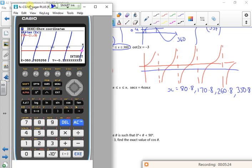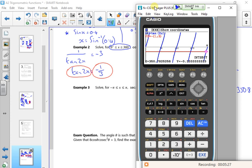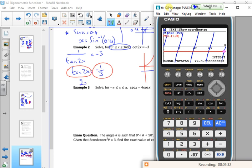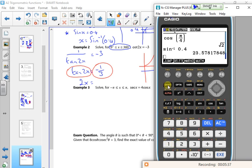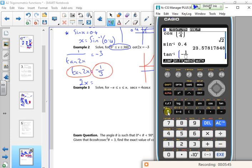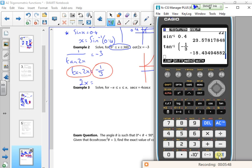Now one bit I kind of missed off there, but I should really have done first, was to work out what the inverse tan was. So if I go into menu one and I do shift tan of minus a third, it gives me minus 18.4. And I didn't really want that one because that one's outside of the range, because it's a minus, because my range of values is 0 to 360. So I don't really want this one.